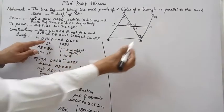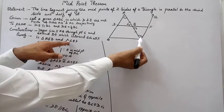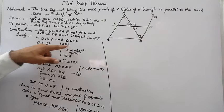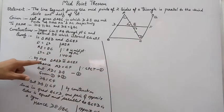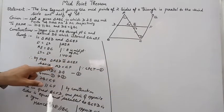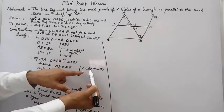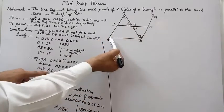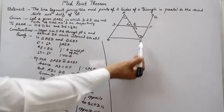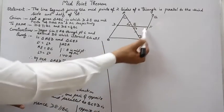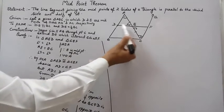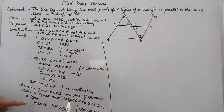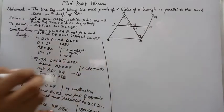In triangle AED and triangle CEF: angle 1 equals angle 2 — alternate interior angles; AE equals EC because E is the midpoint; angle 3 equals angle 4 — vertically opposite angles. By ASA, the two triangles are congruent. Therefore AD equals CF by CPCT. AD equals DB, so DB equals CF. DB and CF are also parallel by construction, making BCFD a parallelogram. Hence DE is parallel to BC. First part is proved.